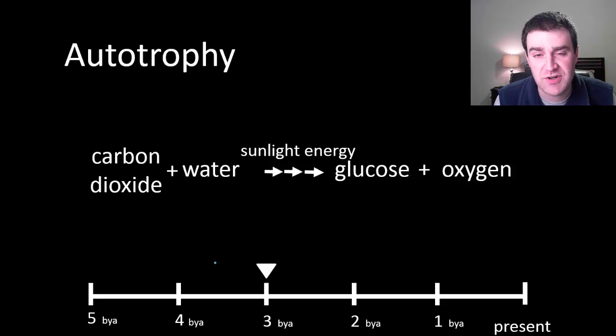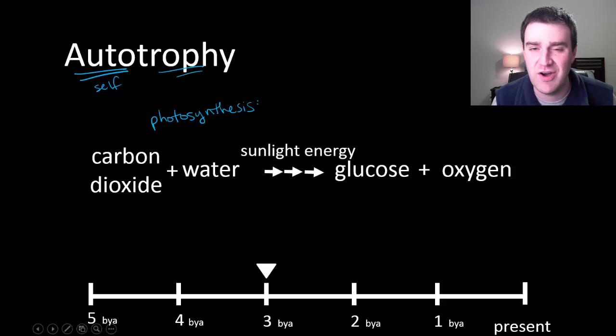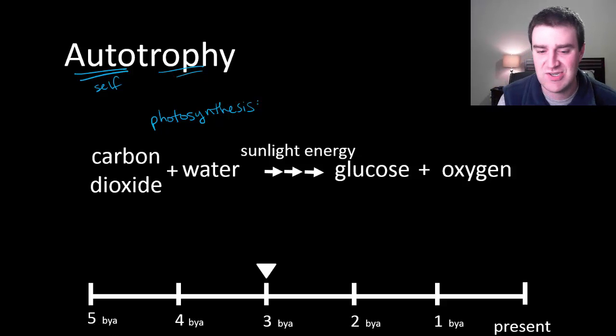So let's start with autotrophy. Certainly the ability to make your own food is going to be really important to get a food chain started. Remember, autotroph means self - you can make your own food or energy from very simple sources. This would be photosynthesis in particular, that I'm reminding you the formula of here, although eventually we'll see that there are other ways to be an autotroph.